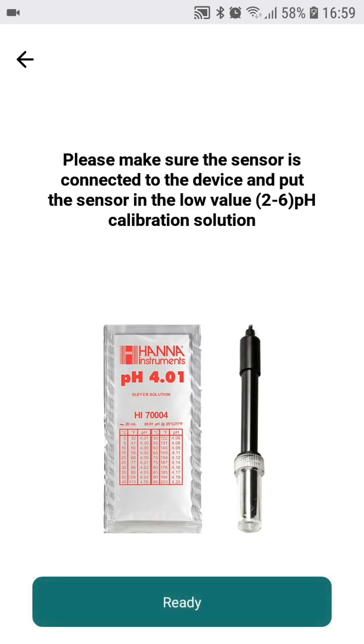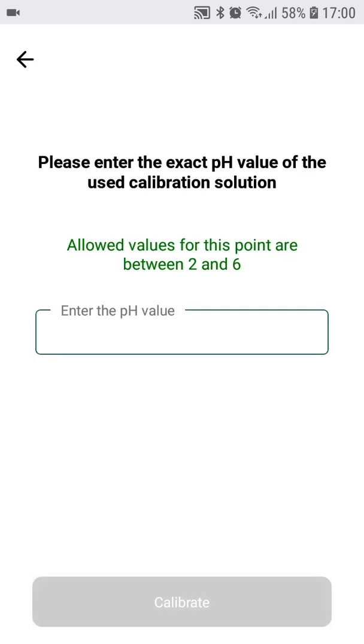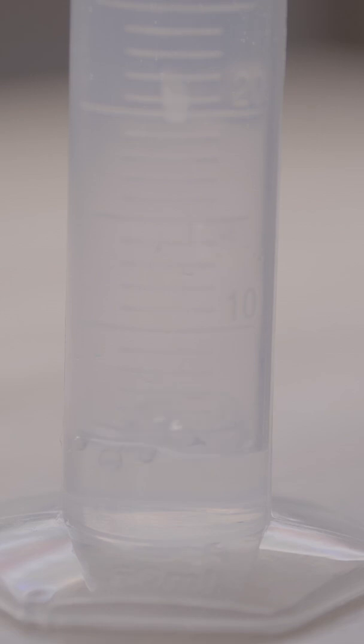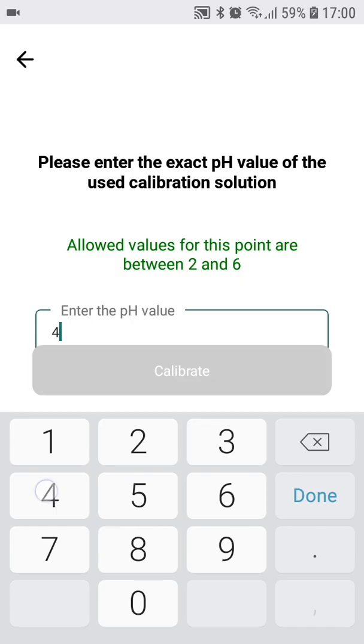One with pH 4 and the other one with pH 10. For future recalibration you can use any standard calibration solutions available. Before you start to calibrate the probe it is good to wash it with clean water just to get rid of the buffer solution used for storage of the probe. First we need to use the low pH calibration solution.